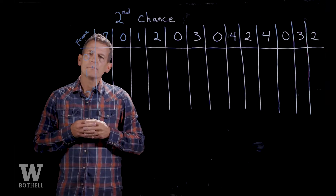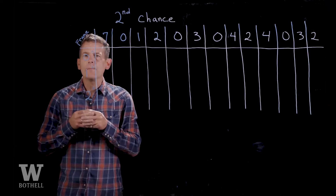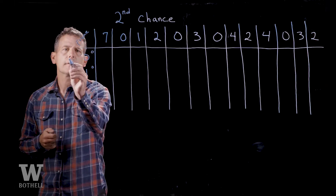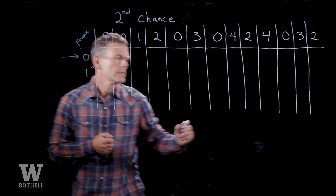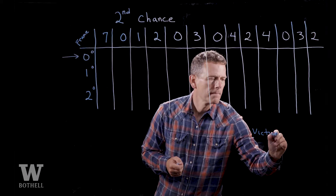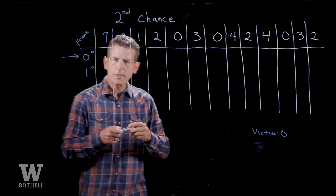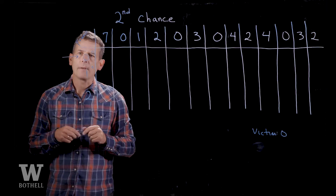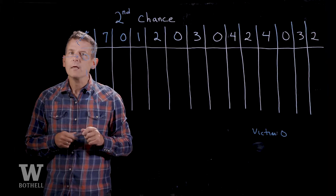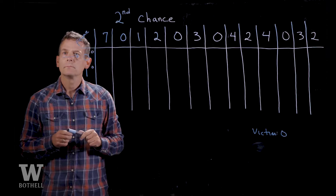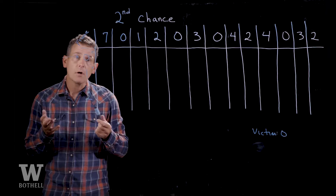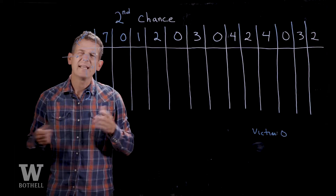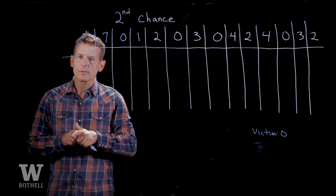In the second chance algorithm, what we do is keep a pointer to the next victim frame, and we'll start at zero. Our victim frame will be zero. We're going to look to see if we can take frame zero for our page. We will take frame zero if the reference bit is set to zero. If it's set to one, we'll set that reference bit to zero and move to the next frame. An example is a lot easier to see than words, so let's jump right in.